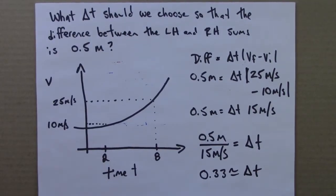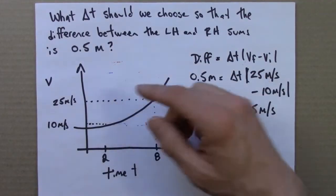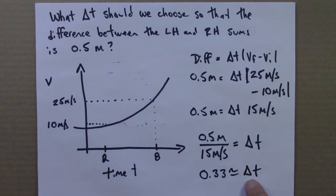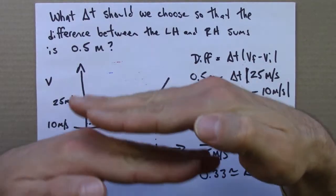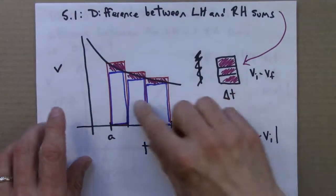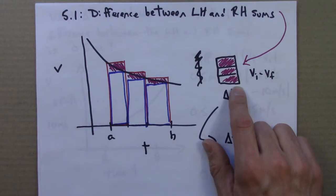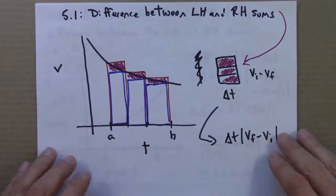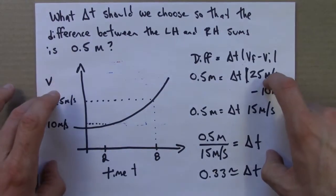So this tells us how small a delta t we would need to choose. If we wanted the difference between the left-hand sums and right-hand sums to be half a meter, this delta t would be what we would need to choose so that we could figure out our final answer would be accurate to within half a meter. So this formula, I hope the derivation is fairly straightforward from this geometric view, and it's not too difficult to apply it. And it can give all sorts of useful information.